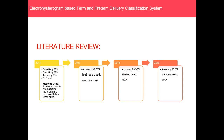Talking about the literature review, research done in 2013 yielded a sensitivity of 96%, specificity of 90%, accuracy of 95%, and an error of 8%, using synthetic minority oversampling techniques and cross-validation techniques. In 2017, an accuracy of 96.25% was achieved using EMD and WPD. In 2018, 83.32% accuracy was achieved using RQA, and in 2019, an accuracy of 95.5% was achieved using EMD.